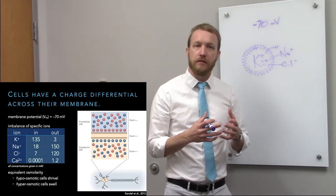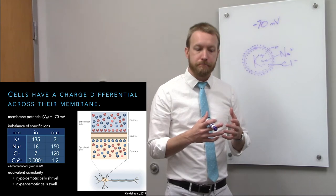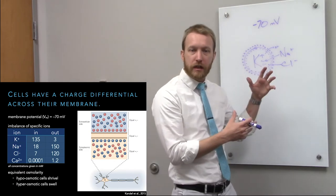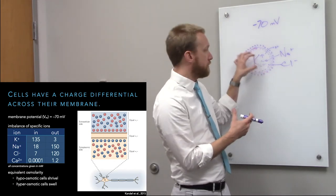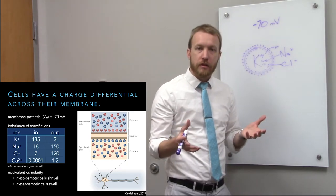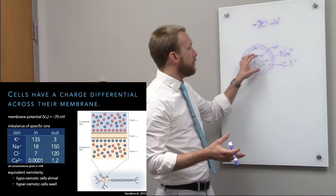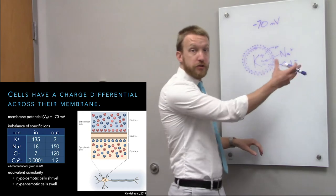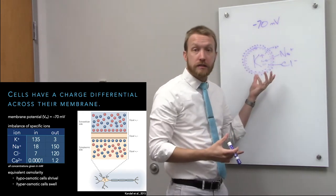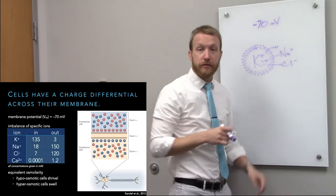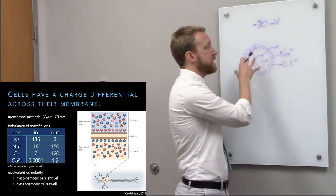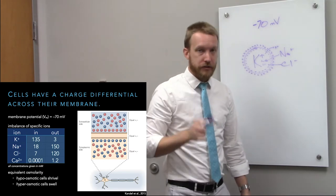Cells tend to have a slightly higher internal concentration to help pull water in and keep them a little plump, but not too much. If we have too many ions inside we bring in too much water and swell up and pop; if we don't have enough ions to keep water in we shrivel — in both cases the cell dies. So think of it as roughly equal concentrations inside and out.